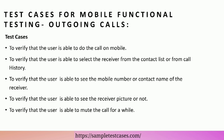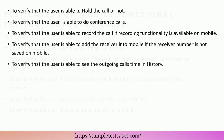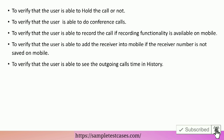Test cases for mobile functional testing — outgoing calls. Test cases to verify that the user is able to make a call on mobile. To verify that the user is able to select the receiver from the contact list or from call history. To verify that the user is able to see the mobile number or contact name of the receiver. To verify that the user is able to see the receiver picture or not. To verify that the user is able to mute the call for a while. To verify that the user is able to hold the call or not. To verify that the user is able to do conference calls. To verify that the user is able to record the call, if recording functionality is available on mobile. To verify that the user is able to see the outgoing call's time in history.